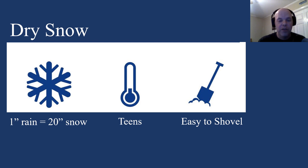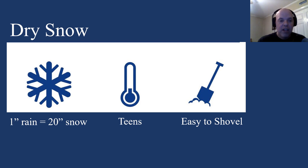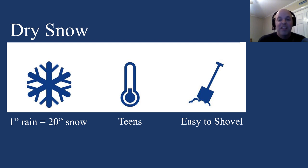Dry snow, on the other hand, occurs when temperatures are much colder — let's say in the teens or even colder. One inch of rain could equal as much as 20 inches of snow. And in Arctic regions, where temperatures are so bitterly cold, one inch of rain could equal as much as 50 inches of snow. This is a very easy snow to shovel, so it's a little easier on our backs.